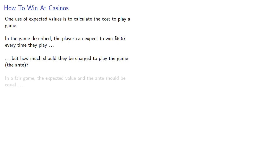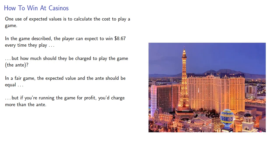So why do we care? One use of expected values is to calculate the cost to play a game. In the game we've described, the player could expect to win $8.67 every time they play. But how much should they be charged to play the game? This is what we call the ante. In a fair game, the expected value and the ante should be equal. But if you're running the game for profit, you charge more than the ante.